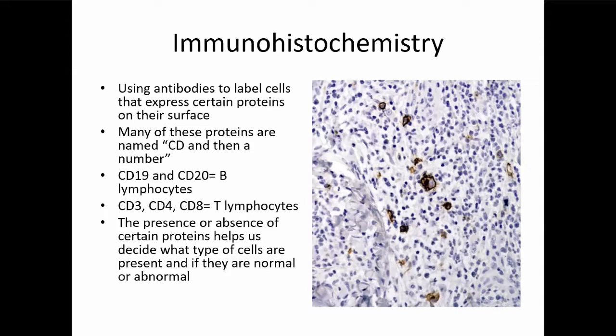Many of these proteins that help us decide what kind of lymphocytes or cells we're dealing with, especially in the immune system, have a name called CD and then a number. Whether you are a B cell or a T cell, they're going to have these different CD proteins. T lymphocytes normally have CD3, and then they usually have CD4 or CD8. CD4 cells are the helper cells — that's usually what we see in mycosis fungoides. The presence or absence of these proteins helps us decide what kind of cells are there and whether they are normal or abnormal.